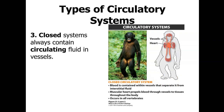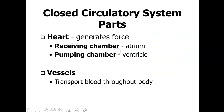The closed circulatory system always contains circulating fluids within specific vessels, and is found in all vertebrates including humans. Blood is contained within vessels that separate it from interstitial fluid, and a muscular heart pump propels blood through vessels and tissues. The heart has receiving chambers called atria and pumping chambers called ventricles. Veins carry blood to the heart, arteries carry blood away, and capillaries are the exchange point at the tissues.